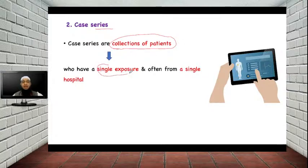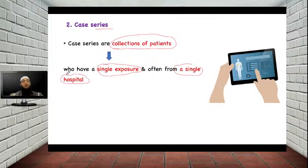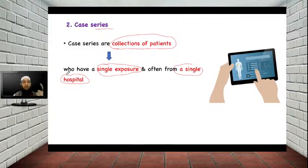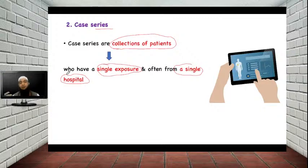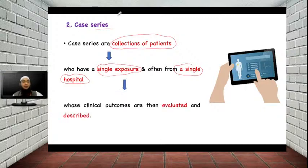Another attribute of case series is that although you study a collection of patients, one thing remains the same: it is a single exposure, meaning the patient is given only a single drug, and they are often from a single hospital, not other hospitals. Since they are from a single hospital, the experimental conditions remain the same, the environment remains the same. This helps ensure that the effect produced is purely due to the drug and not due to external factors.